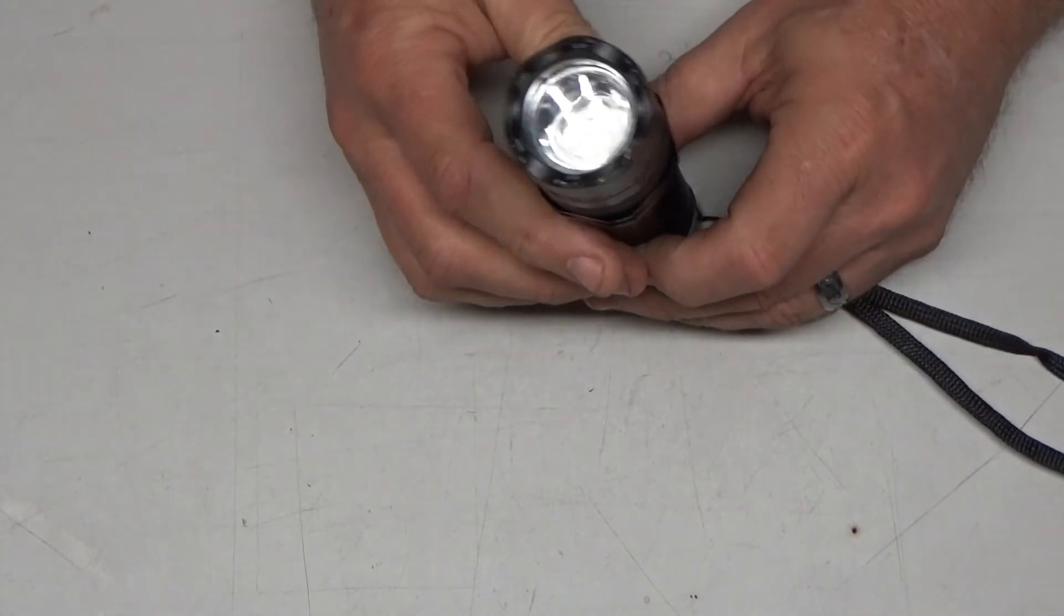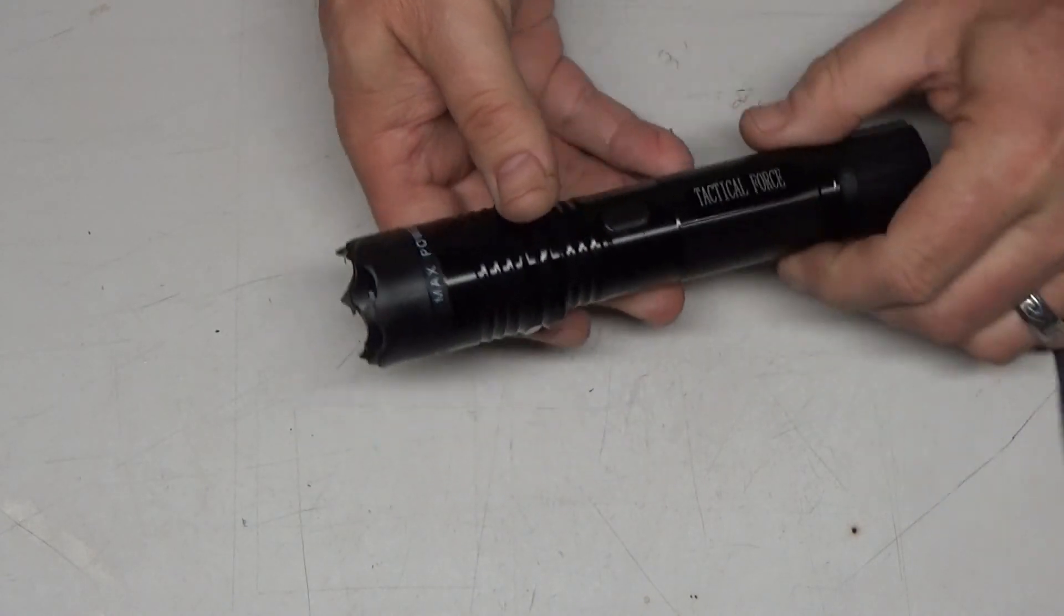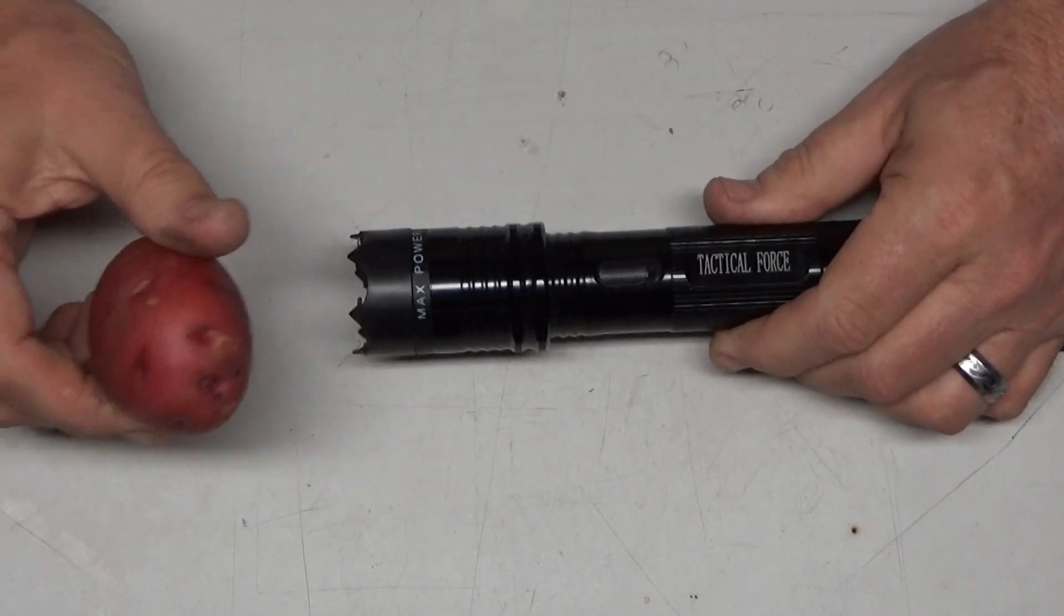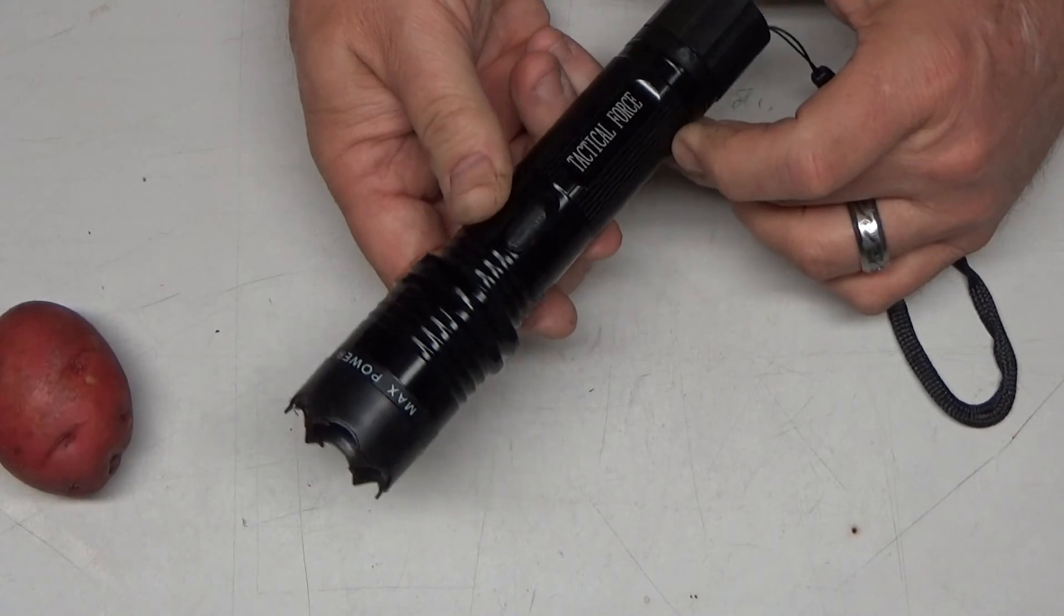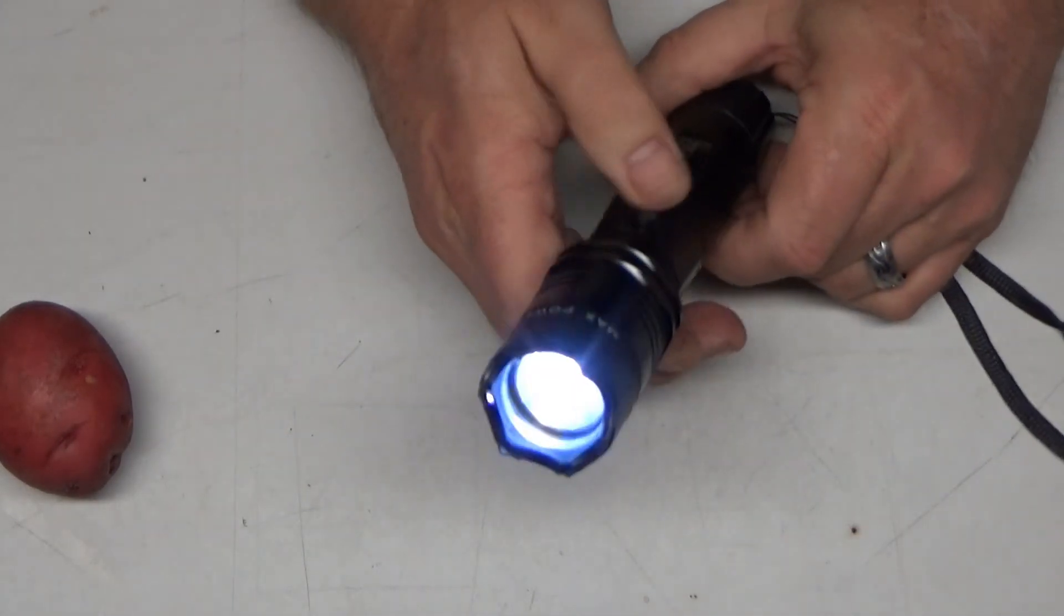Anyway, that's a quick look at this. I'm going to see if there's things I can stun, but like I said I don't really want to hurt or kill any small creature. But I was really hoping to see a little bit more happen with this. Here was a quick look at a tactical force stun gun light.